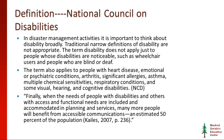When the needs of people with disabilities and others with access and functional needs are included in planning and services, approximately 50% of the older population would fall under those definitions — a staggering number. To be honest about my own age — I'm over 65 — I have arthritis, significant allergies, I can go into asthma, I wear eyeglasses, and I'm almost deaf in one ear. So technically, I could be a functional and access needs category.